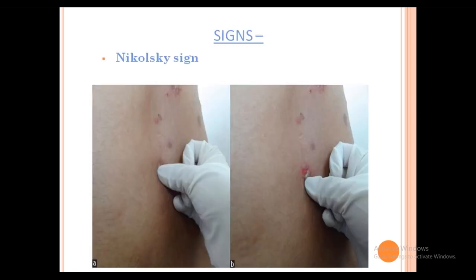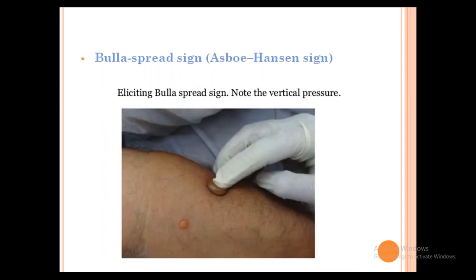Two important clinical signs: Nikolsky sign — on a bony prominence near the blister, apply tangential pressure and the skin will peel off, indicating active Pemphigus Vulgaris. Bulla Spread Sign (Asboe-Hansen sign) — mark the bulla with a pen, apply vertical pressure to the center of the bulla, and it will spread laterally because the split is inside the epidermis.